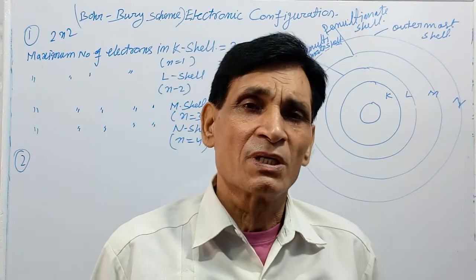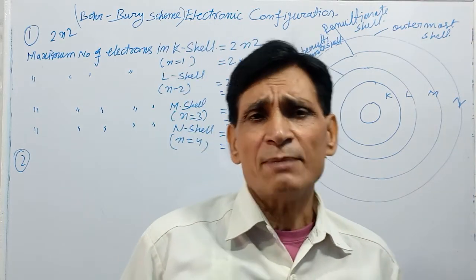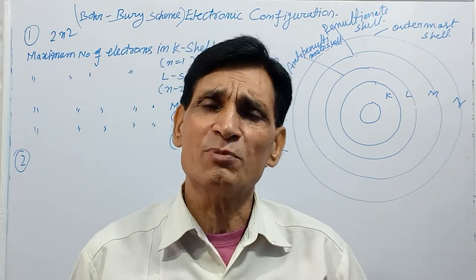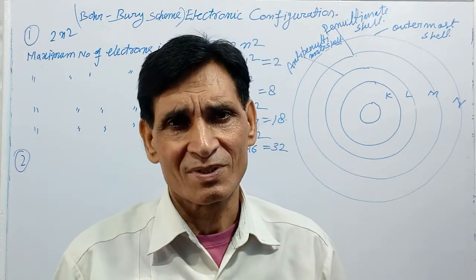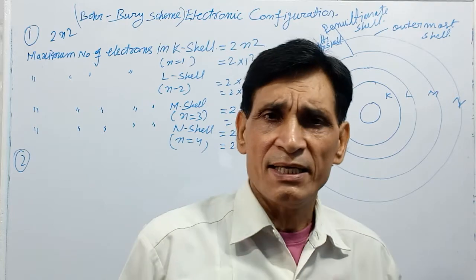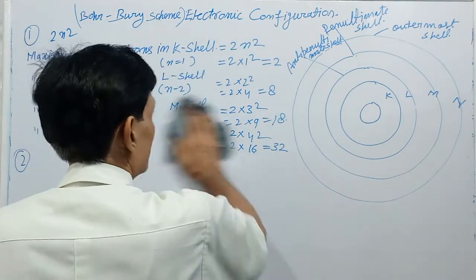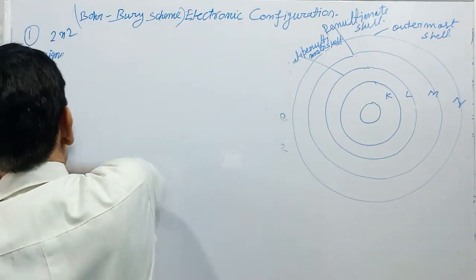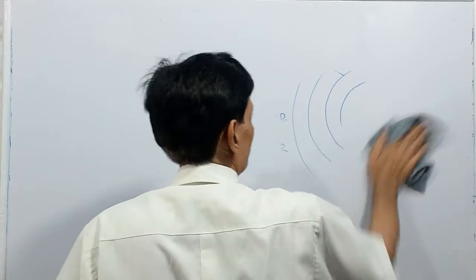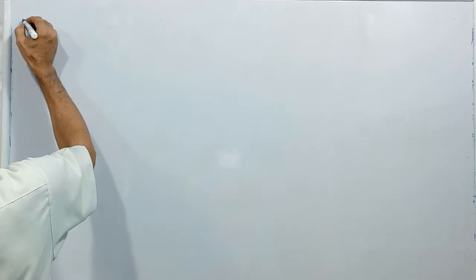Remember these five points and you will be able to understand electronic configuration. The last point is: an element which is chemically stable has 8 electrons in its outermost shell. Now let us see some examples — about 20 to 25 elements, one by one. The elements are: hydrogen, helium, lithium, beryllium, boron, carbon, nitrogen, oxygen, fluorine, neon.